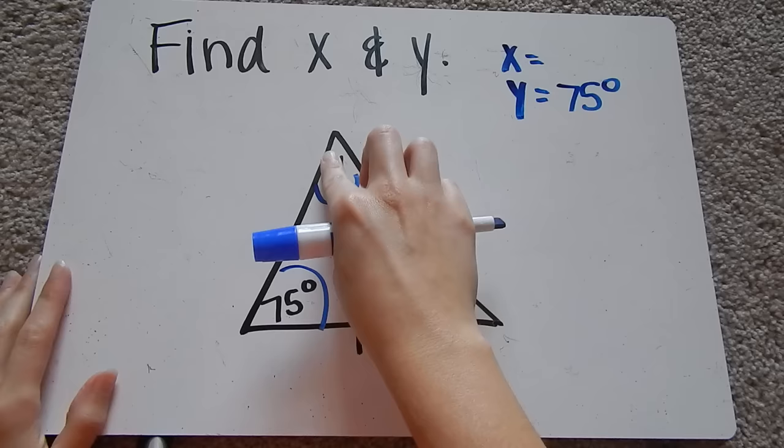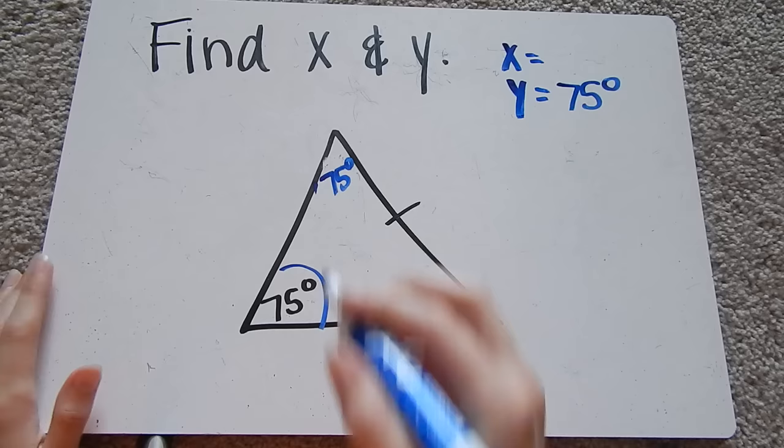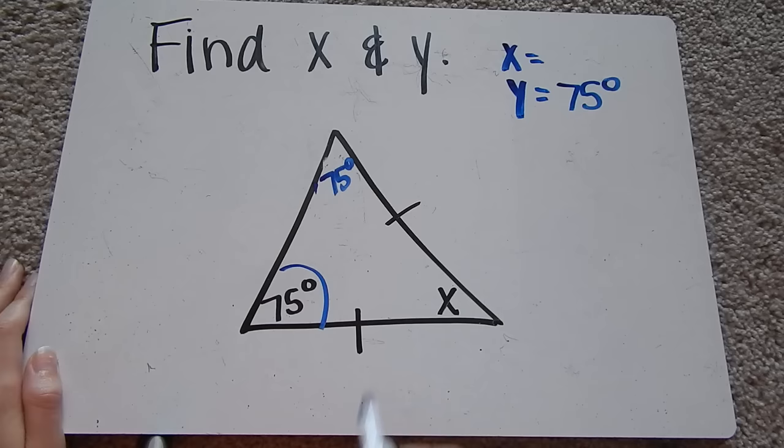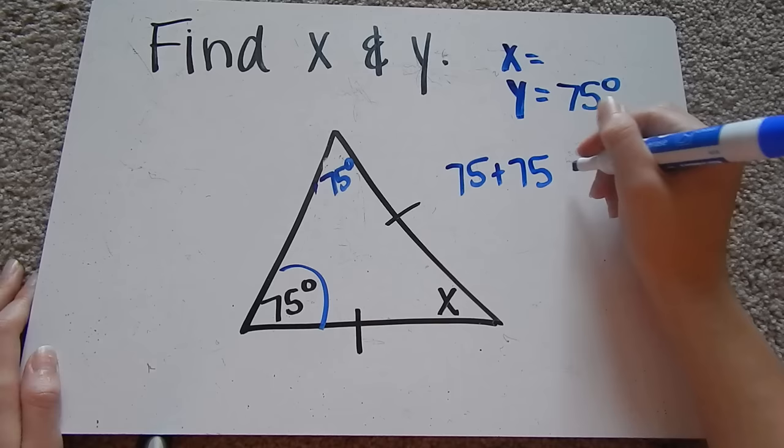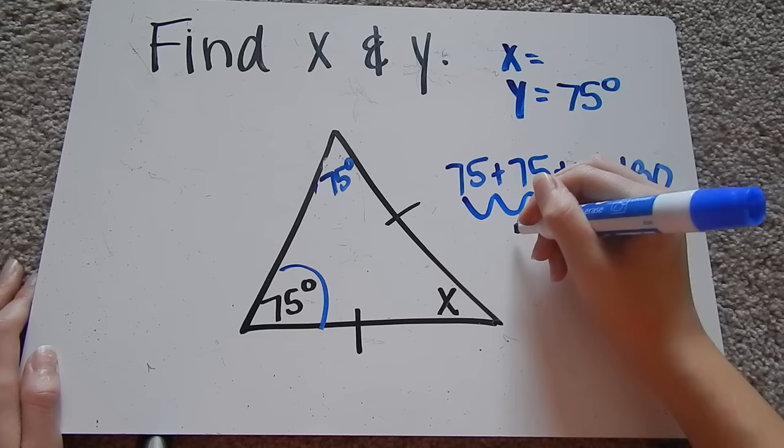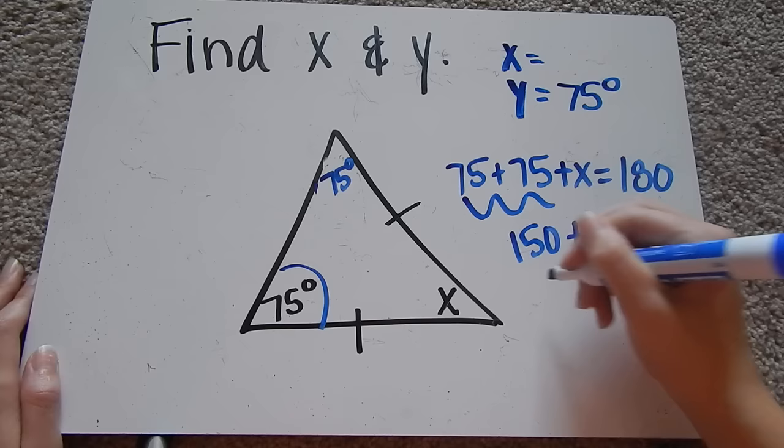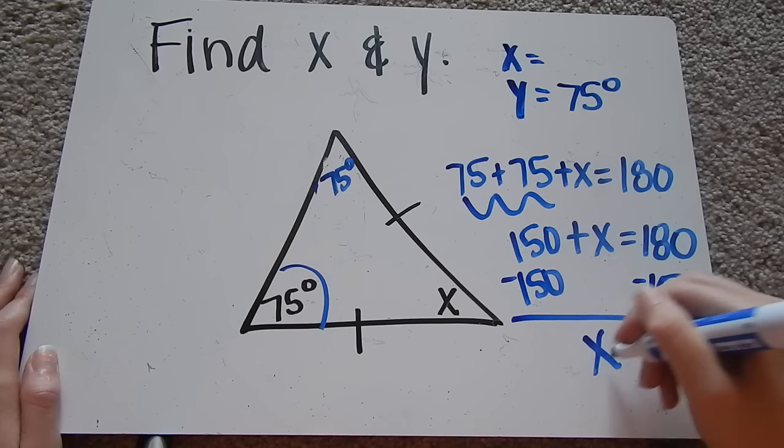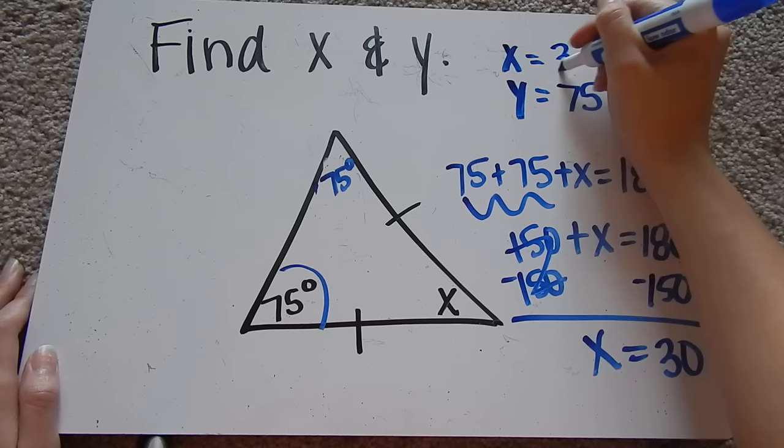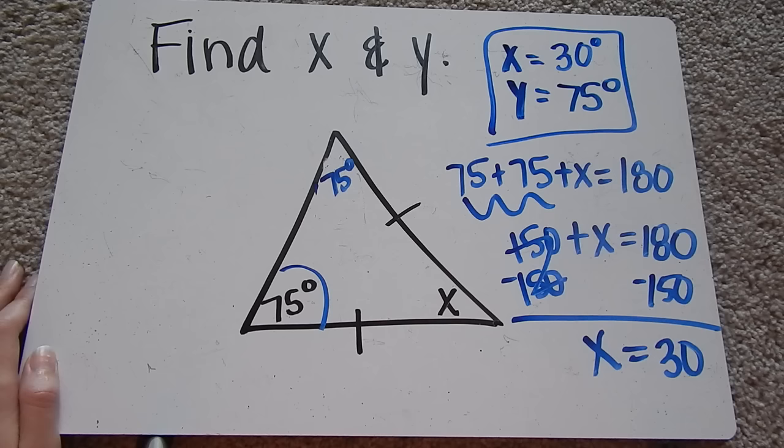Now, let me go ahead and erase this and put the actual measure. This is now 75 degrees. So now we can easily figure out x, because all angles of a triangle add up to 180. So x is going to be 75 plus 75 plus x equals 180. Combine like terms. 150 plus x equals 180. Subtract 150 from both sides. x equals 30. So x is 30 degrees. So those are our answers to this example problem.